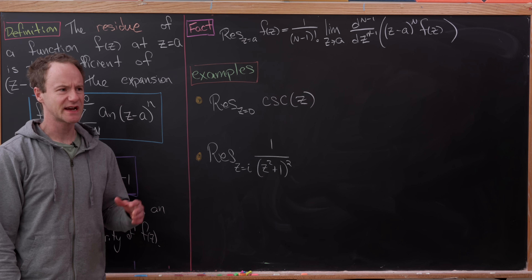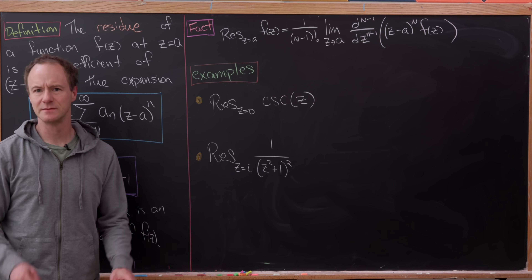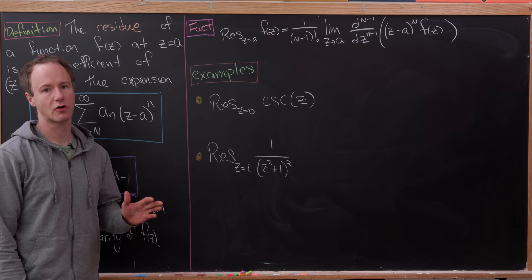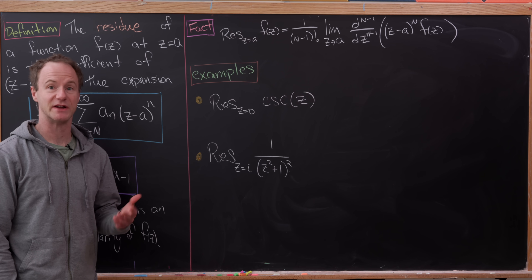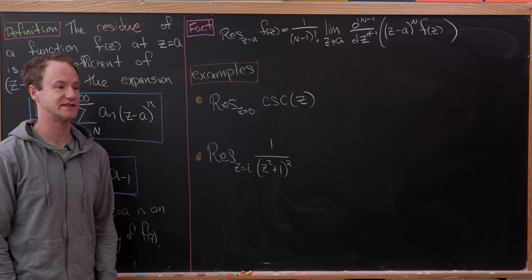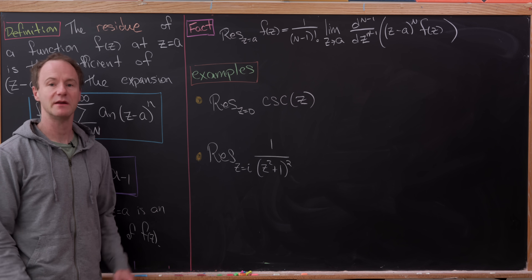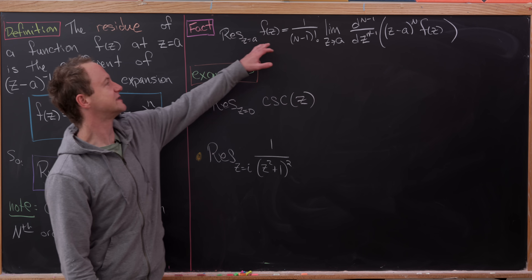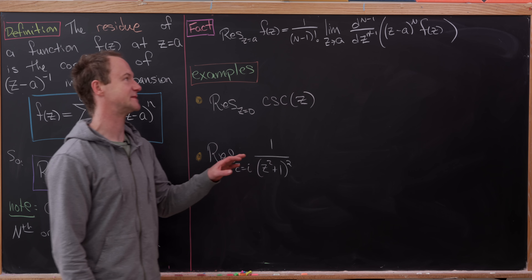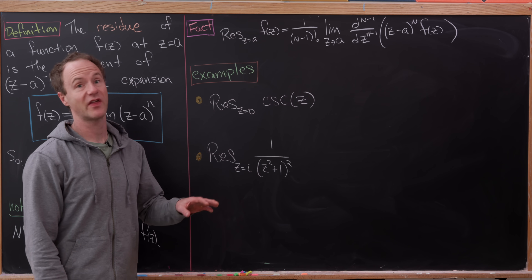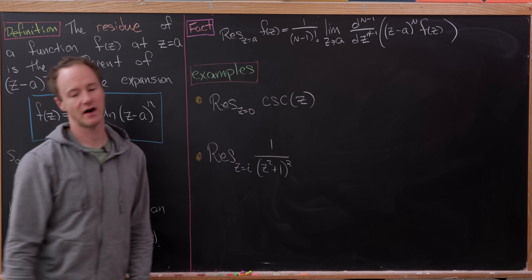Now there's actually a much easier way of calculating the residue. You can obviously prove this if you're taking a course in complex analysis — I have a full one on the second channel, Math Majors, if you'd like to check that out. The residue of f at a is equal to one over (N minus one) factorial times the limit as z goes to a of the (N minus 1)th derivative of (z minus a)^N times f(z).